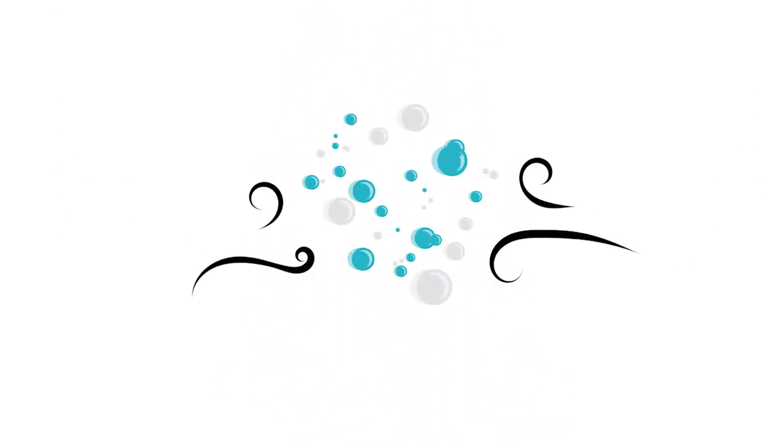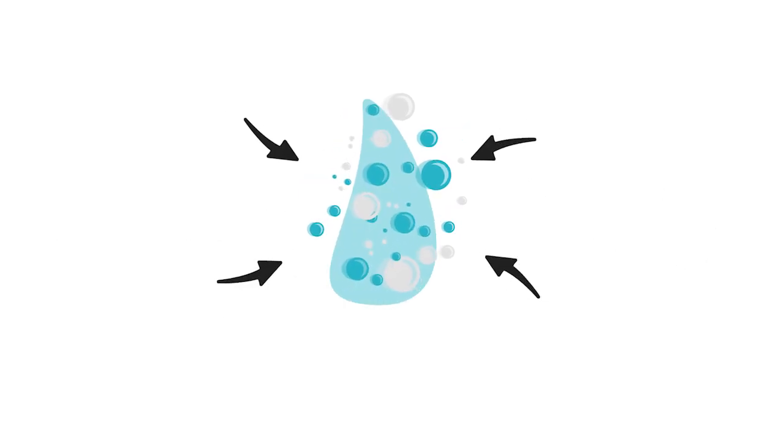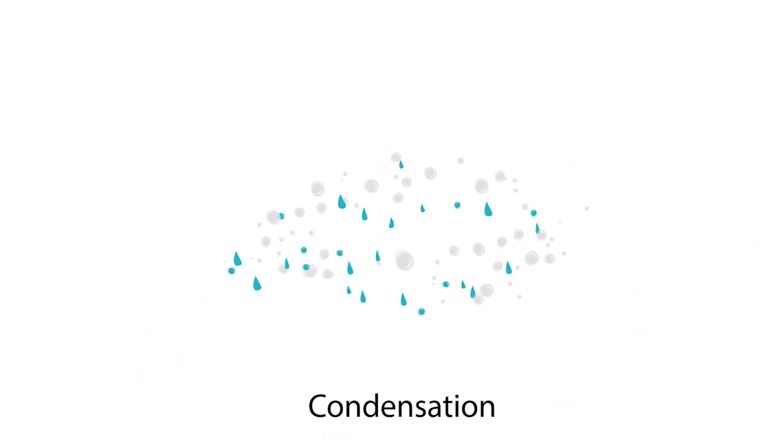As the water vapour cools, it turns back into a liquid, forming tiny water droplets in the sky. This is called condensation. You can see condensation in action. The tiny water droplets join together forming clouds.